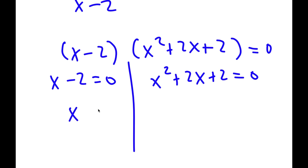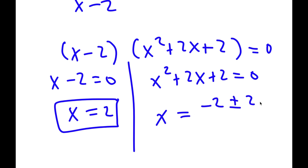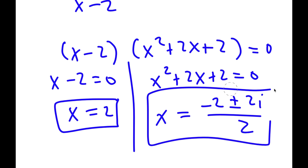For x minus 2 equals 0, x is obviously equal to 2. For x squared plus 2x plus 2 equals 0, you'll want to use the quadratic formula, and you get x equals negative 2 plus or minus 2i over 2. So those are my three solutions to this problem.